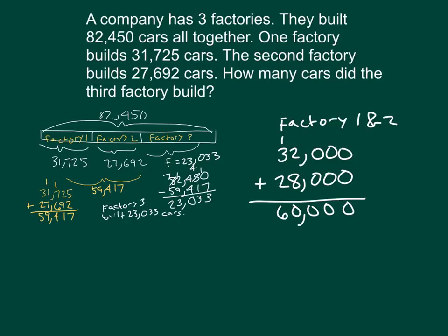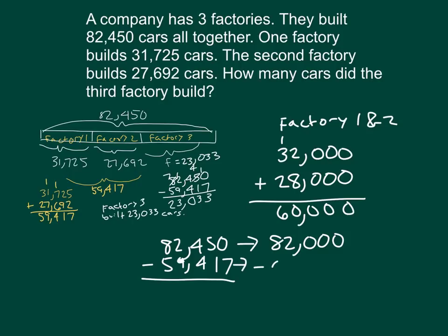My full amount was 82,450. But instead of that there and subtracting 82,450 minus 59,417, I am taking those estimated amounts of, let's see, that would be 82,000, nearest thousand, minus 60,000 that I had just figured out, which is about 22,000, which would be the amount for factory three. It is very close to my actual amount, so I think that my answer is reasonable.